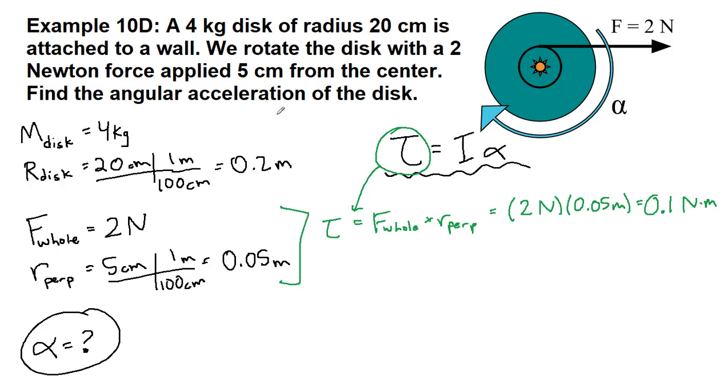And up here we have everything we need for the moment of inertia I. Now the moment of inertia of a disk shape specifically is one half times the full mass of the disk times the full radius of the disk squared.